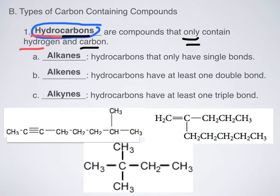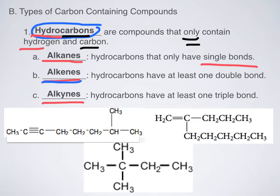Look back at urea's picture — it had an oxygen and a couple of nitrogens, so it is not a hydrocarbon. There are three broad categories of hydrocarbon, and they sound very similar, so make sure that you write them down correctly: alkanes, alkenes, and alkynes. Alkanes have single bonds only. Alkenes have at least one double bond. And alkynes have at least one triple bond.